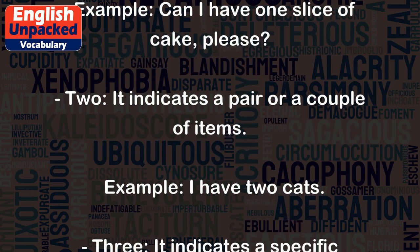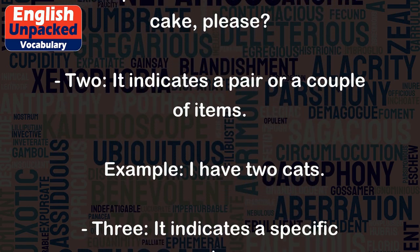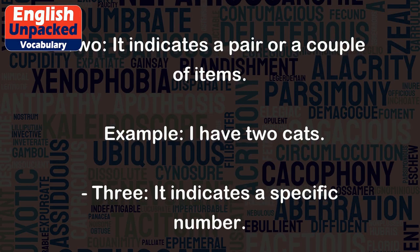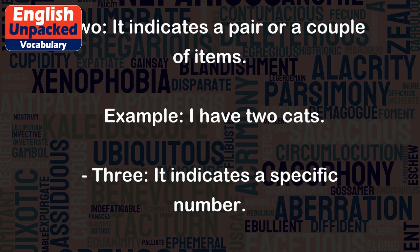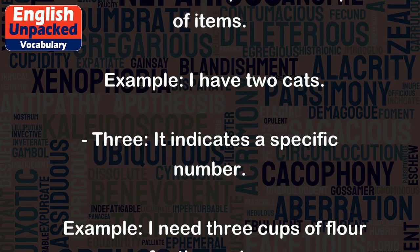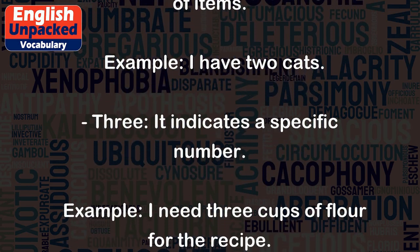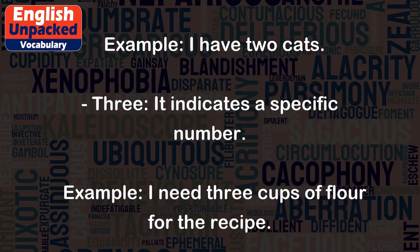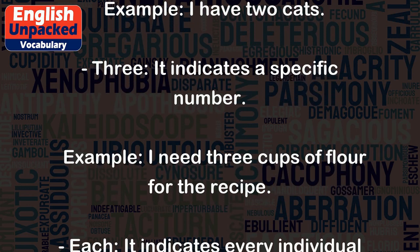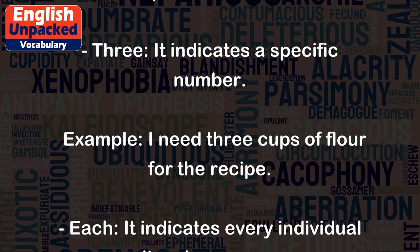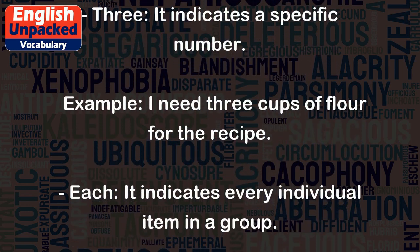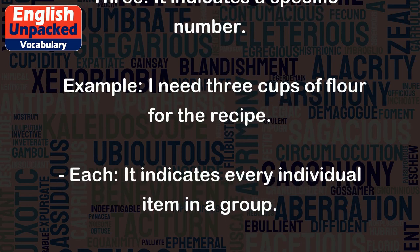'2' indicates a pair or a couple of items. Example: I have two cats. '3' indicates a specific number. Example: I need three cups of flour for the recipe.